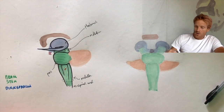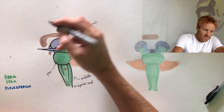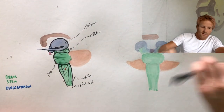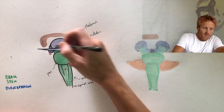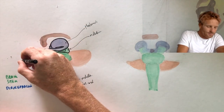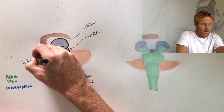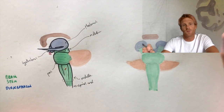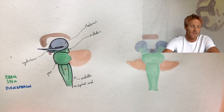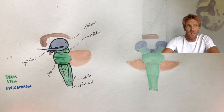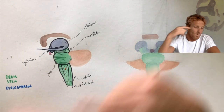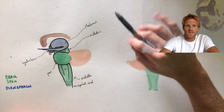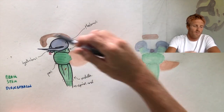Another part of the diencephalon sits in front of and below the thalamus — this is called the hypothalamus. "Hypo" means below, and then thalamus. The hypothalamus is not a huge structure, but it is incredibly important with many different jobs. It controls thirst, fluid balance, hunger, and body temperature. It also controls the autonomic nervous system — your fight-or-flight response versus your rest-and-digest — and is in direct control of what those two systems do.